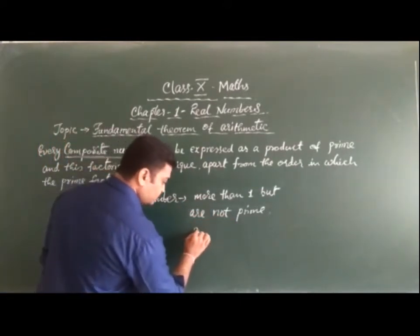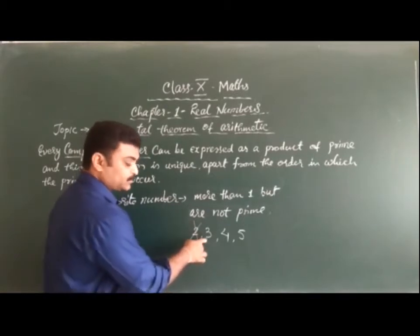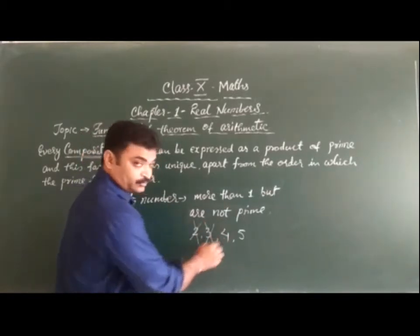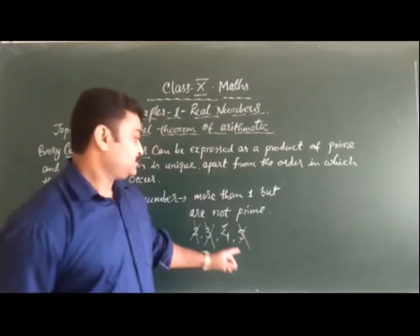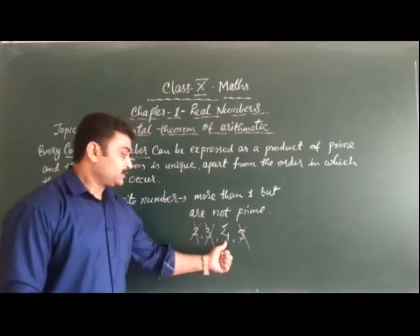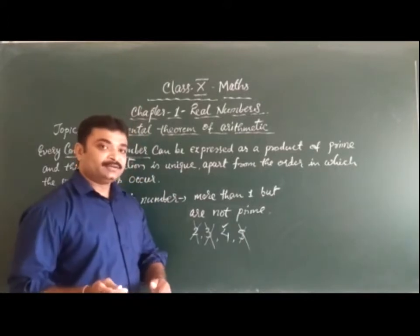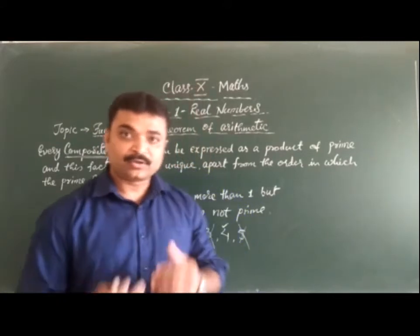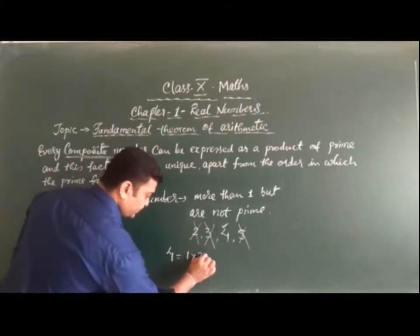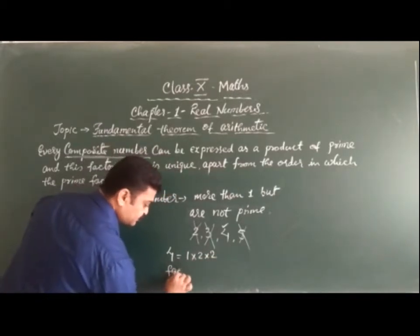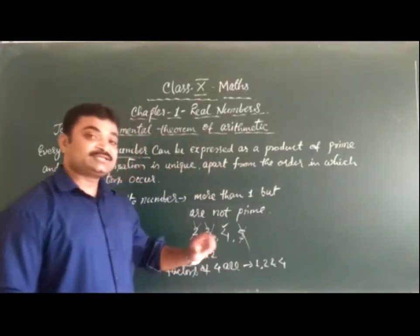For example: 2 is a prime number so it is not composite. 3 is also prime, not composite. 4 is not prime, so it is a composite number. 5 is prime, so it is not composite. Therefore 4 is the least composite number. In other words, a number which has more than two factors — the factors of 4 are 1, 2, and 4 — so our least composite number is 4.